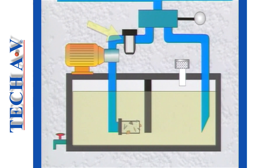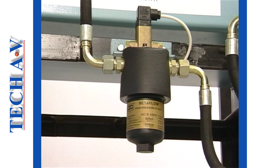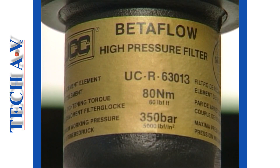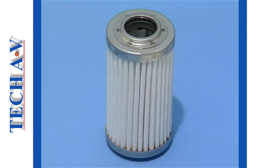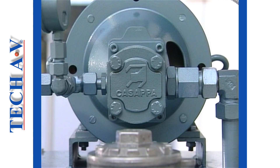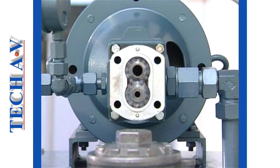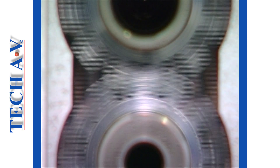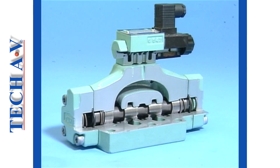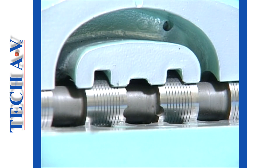The next device we come to is a pressure-line filter. This is normally a full-flow type filter, capable of withstanding high pressure. Pressure-line filters are designed to trap particles ranging in size from 3 to 40 microns. Such particles are often caused by abrasion within the pump and are particularly harmful to control valves and other devices that have very small working clearances.